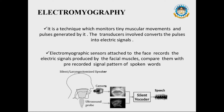Electromyography is a technique that monitors tiny muscular movements and the pulses generated by them. The transducers involved convert the pulses into electric signals. Electromyographic sensors attached to the face record the electric signals produced by facial muscles and compare them with the pre-recorded signal pattern of spoken words.